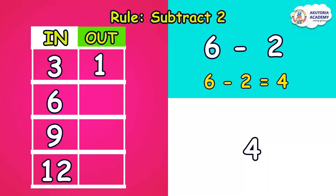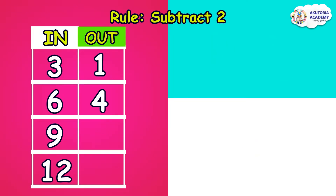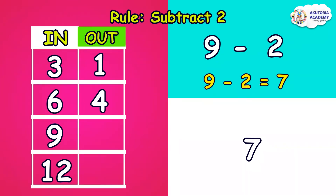The third number is nine. Our rule says subtract two, so nine minus two equals seven. We place our answer, seven, just beside nine in the out column.